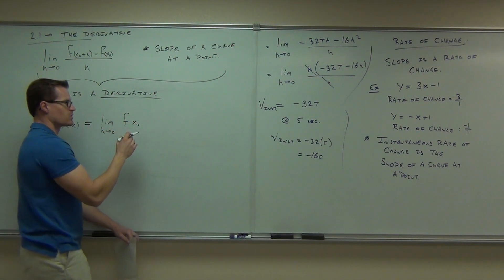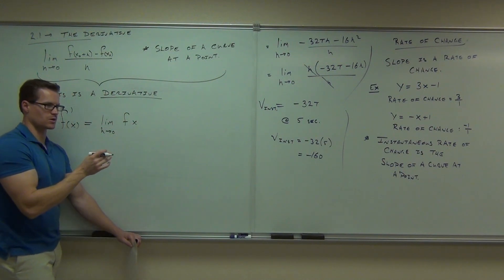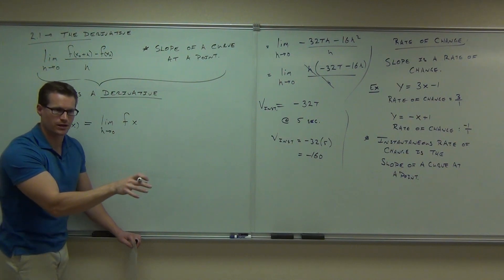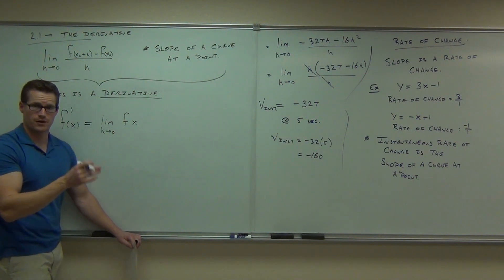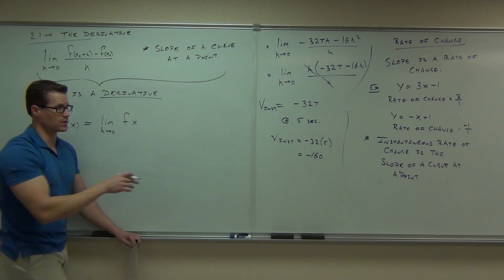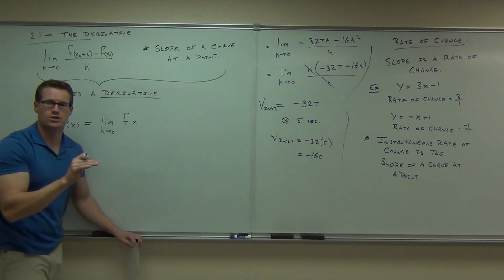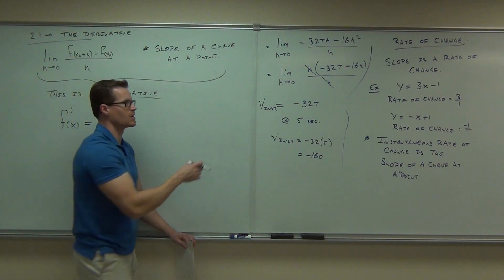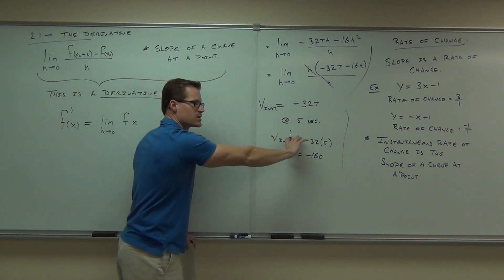And you know what? In general, we're not going to have a specific point. So I'm going to erase the x sub zero. I'm going to say, we're not going to do this at a specific point anymore. Maybe we'll do that later. We want the equation for the slope of a curve at a point. We're going to stop doing this for a specific point. We might plug in some afterwards.